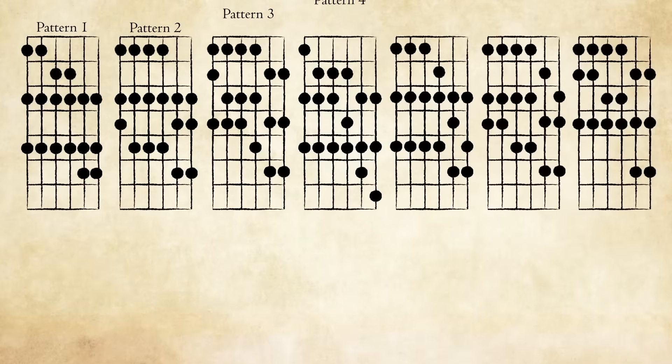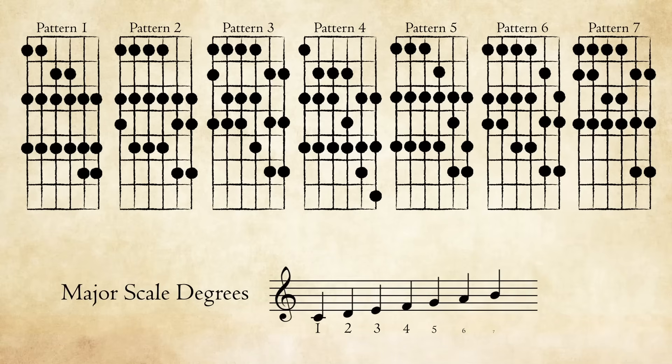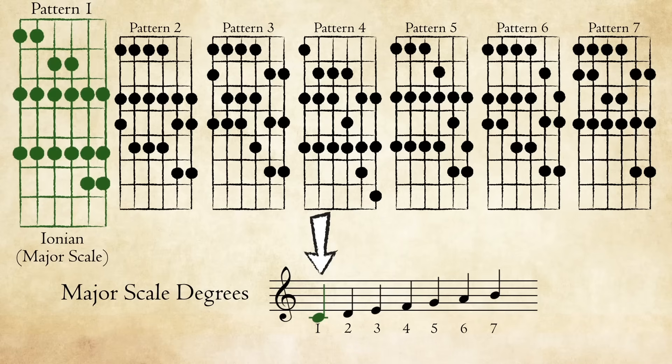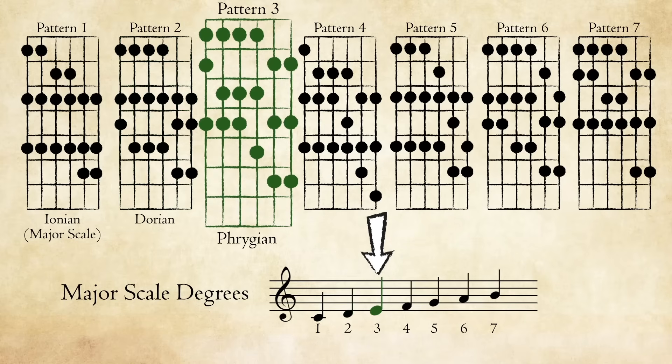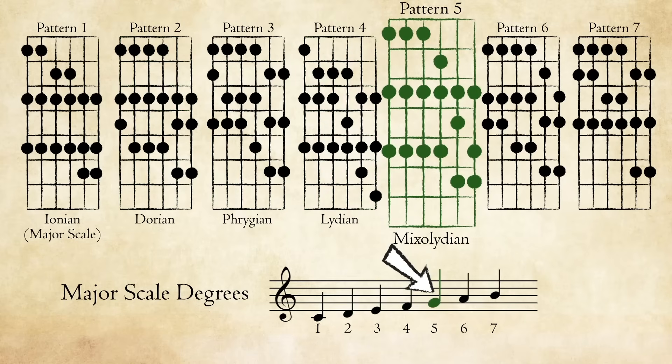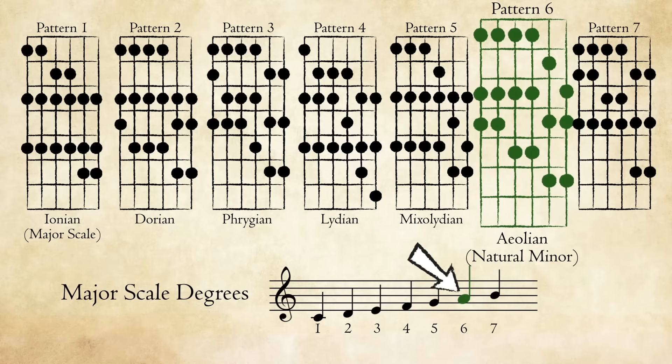We can also apply our patterns to play all the natural modes. Each major scale pattern is also one of the seven modes. This chart shows each pattern and the mode associated with it. Starting a major scale on the first degree is the Ionian mode, which is just the major scale itself. Starting the major scale on the second degree is the Dorian mode. The third degree is the Phrygian mode, fourth is Lydian, fifth is Mixolydian, sixth is Aeolian or the natural minor scale, and seventh is Locrian.